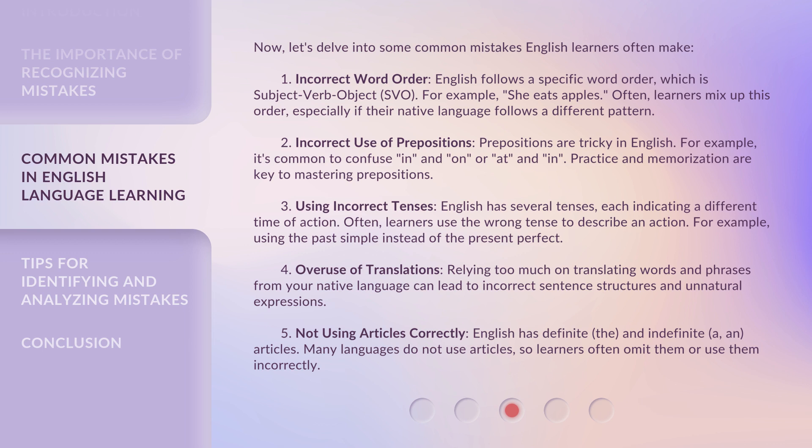1. Incorrect Word Order. English follows a specific word order, which is subject-verb-object, or SVO. For example, 'she eats apples.' Often, learners mix up this order, especially if their native language follows a different pattern.